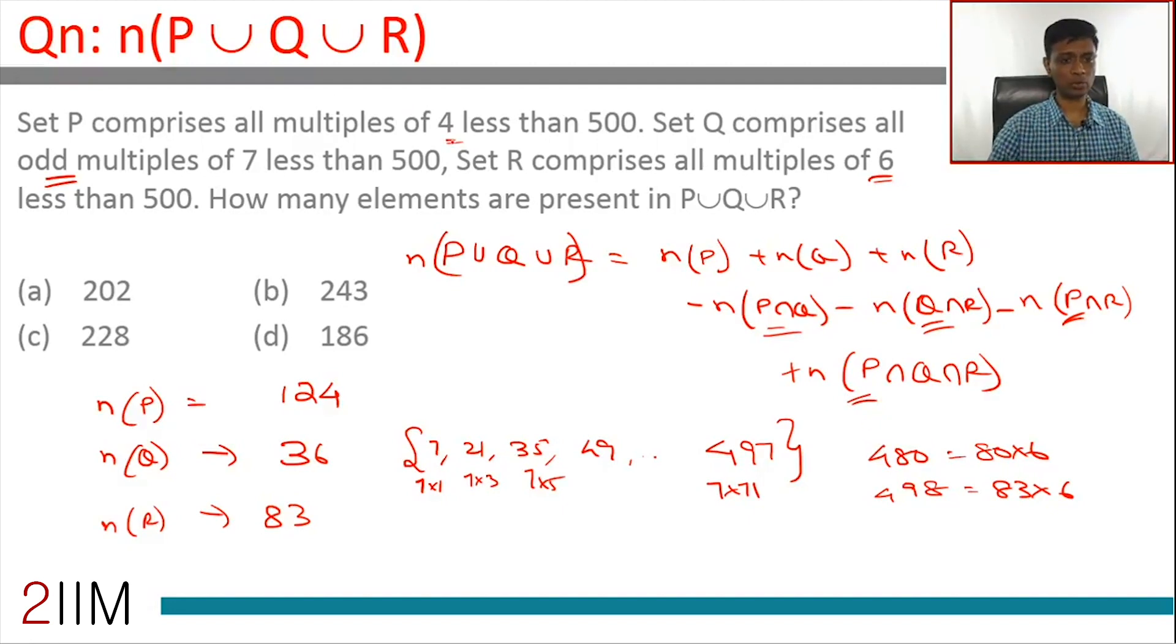Think about P∩Q. P is the set of all multiples of 4, Q is the set of all odd multiples of 7. P has all even numbers, Q has only odd numbers. So all elements in P are even, all elements in Q are odd. There's no intersection. This goes to 0.